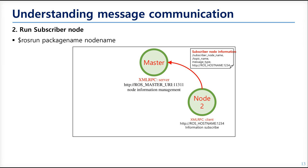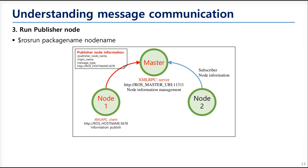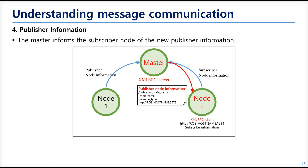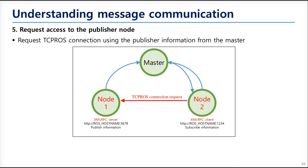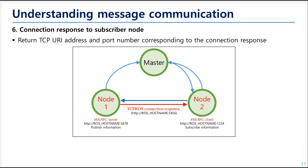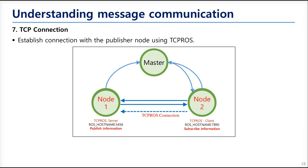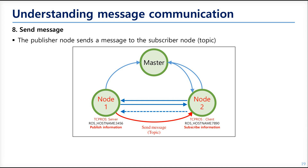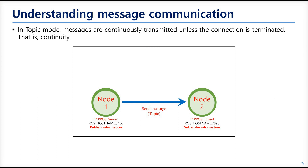When you run a node that subscribes to a specific topic, the node gives its information to the ROS master — including the node name, topic name, topic message type, and port number. When you run a node that publishes a specific topic, it also gives its information to the ROS master. If the topics of the two nodes match, the ROS master provides the publisher node's information to the subscriber node. The subscriber then tries to connect with the publisher, the publisher responds, and once connected, the publisher sends topic messages to the subscriber.